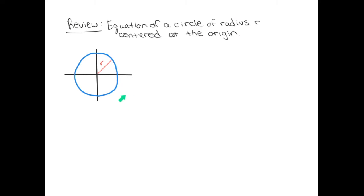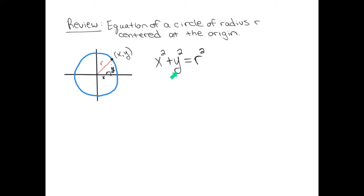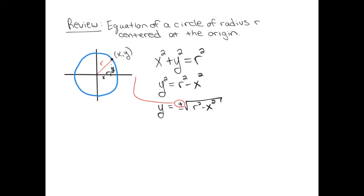Today's lesson is about definite integrals that boil down to basic shapes. I want to remind you of the equation of a circle of radius R centered at the origin. If we pick a point on the circle (x, y), there's a right triangle with sides x and y. Using the Pythagorean theorem, we obtain the equation of the circle. Solving for y — subtracting x squared from both sides and taking the square root — the plus sign gives the top half of the circle and the minus sign gives the bottom half.